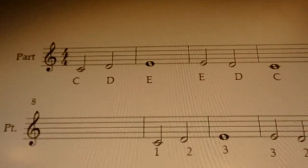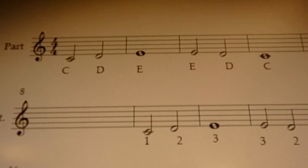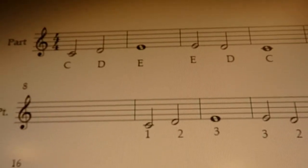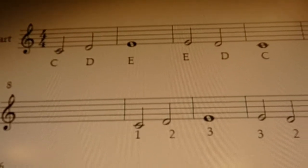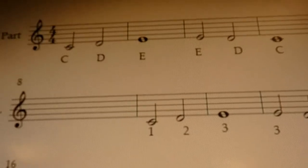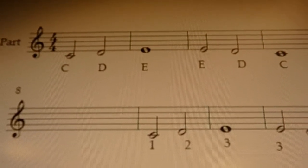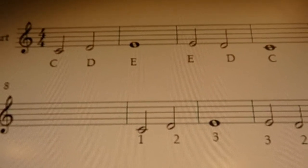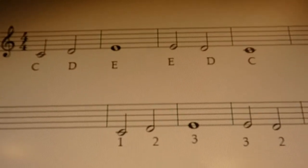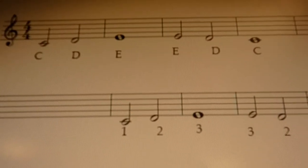And remember, a half note gets two beats, and a whole note gets four beats. So if we were going to sing this first example, saying the letter names, it would sound like this. It would go C, D, E, E, D, C.